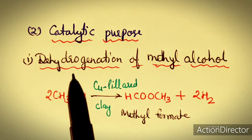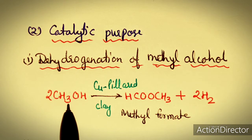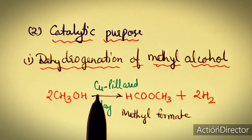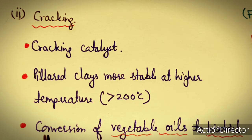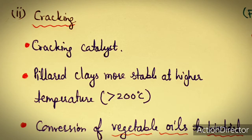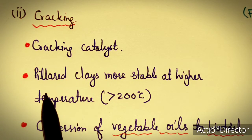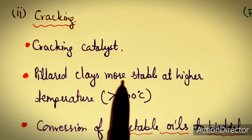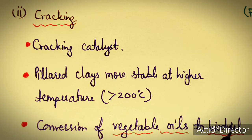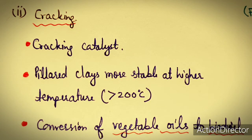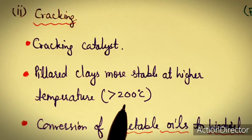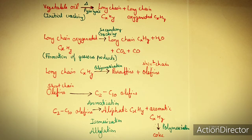Among catalytic applications, one is the dehydrogenation of methyl alcohol (methanol). In the presence of copper pillared clays, methanol can be converted exclusively to methyl formate. Another catalytic advantage is cracking. Pillared clays are more stable at higher temperatures — they can withstand temperatures greater than 200°C — making them useful for conversion of vegetable oils to biodiesel or biofuels as cracking catalysts.